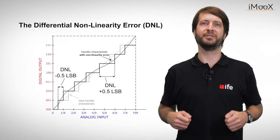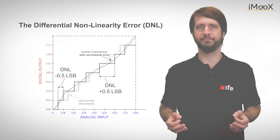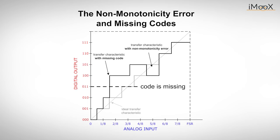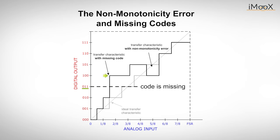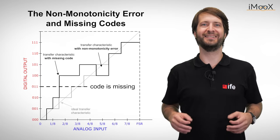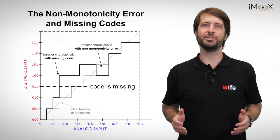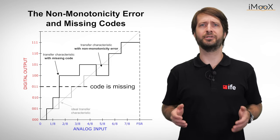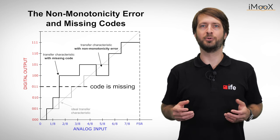If the differential non-linearity error becomes greater than one LSB, we get another type of error that poses a great risk for the stability of control loops: the so-called non-monotonic error, or missing codes. In this case we do not get all digital output values for the entire analog input range. In the example shown, the digital code 011 is missing — the output jumps from binary 010 (which is 2) to 100 (which is 4), without ever showing 3. So beware of linearity pitfalls when choosing a converter, and always consider the application. An ADC optimized for audio may be the worst choice for a control loop or voltage setting application.